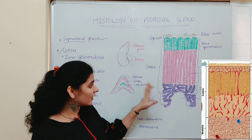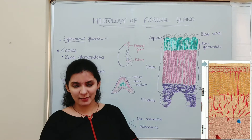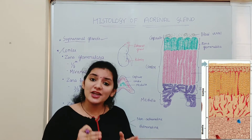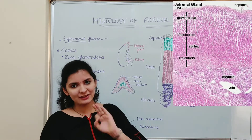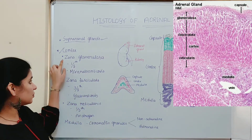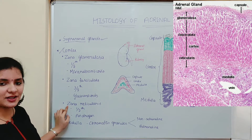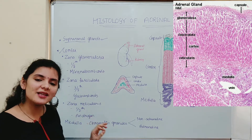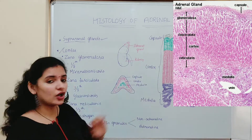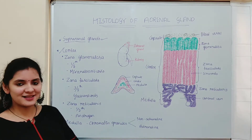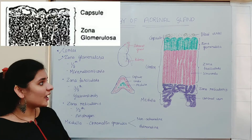The cortex is mainly made up of cords of cells arranged in different manners. Based on the arrangement of these cords of cells, the cortex is divided into three regions: zona glomerulosa, zona fasciculata, and zona reticularis. We'll discuss these three layers one by one.